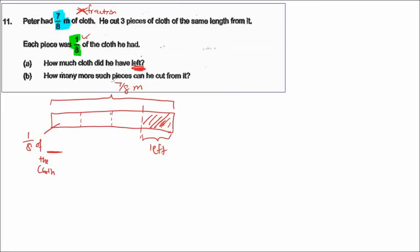One-eighth of the cloth — the cloth is 7 over 8 meter. So how much cloth did he have left? He cut one-eighth of 7 over 8, because one-eighth of seven-eighths meter — that gives us 7 over 64.